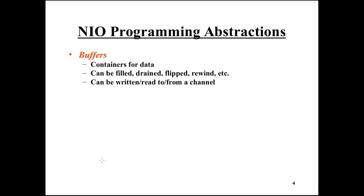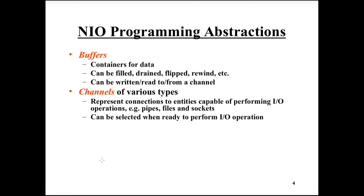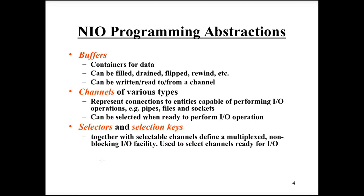Another abstraction is channels. A channel represents a connection to some source or drain to which data can be passed or from which data can be read — like, for example, a file or a socket. Selectors and selection keys are used to select which channel can perform non-blocking IO at a particular time. We can query a selector for which channels are ready to perform IO immediately without blocking.